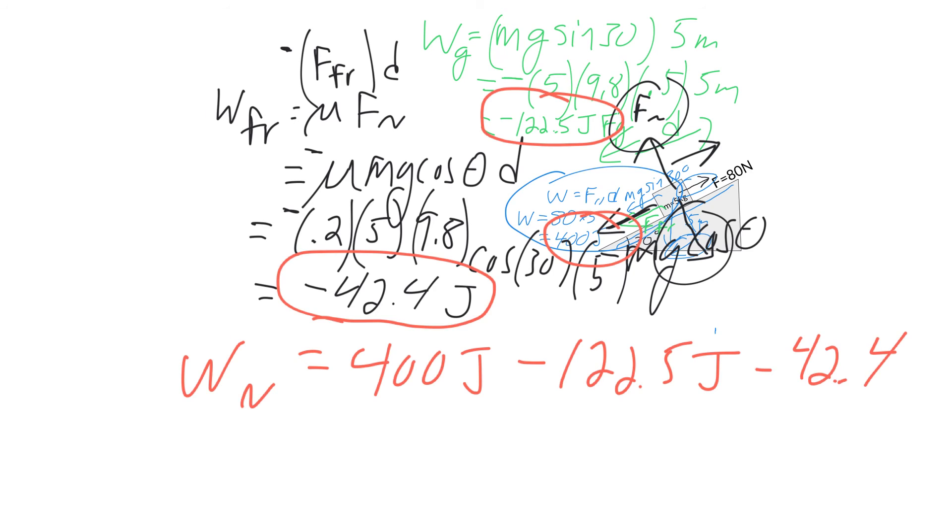Conceptually notice when I'm doing work, I'm pulling it up. So I'm adding energy to the system. That's why it's positive. Gravity is kind of trying to pull back down. So that's why it's trying to remove work from the system. And then lastly, we have friction, which is also removing energy from the system. So when I calculate my net work, I get 235 joules.